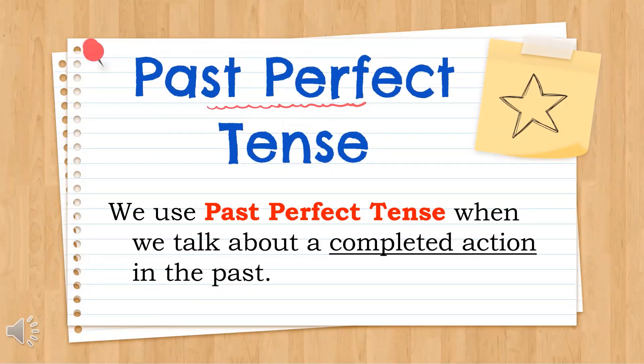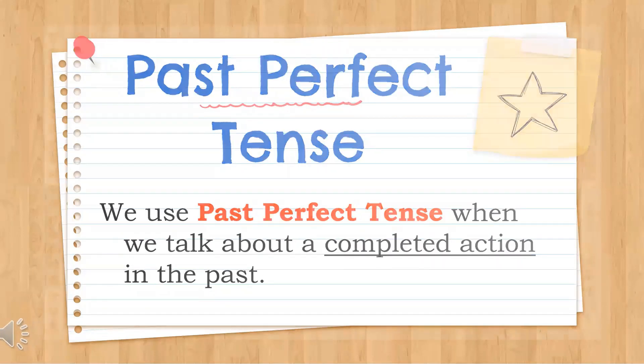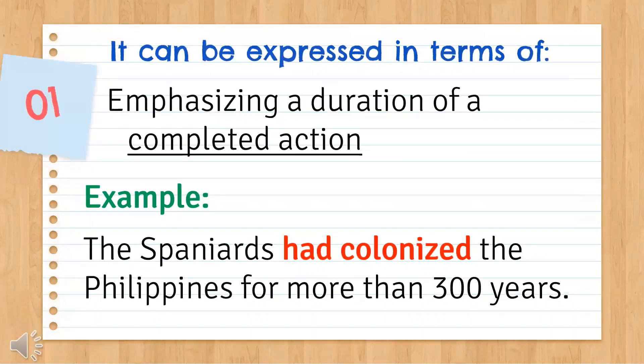We use past perfect tense when we talk about a completed action in the past. It can be expressed in terms of when we emphasize a duration of a completed action. Example: the Spaniards had colonized the Philippines for more than 300 years. 'Had colonized' is the completed action; the duration is 'for more than 300 years.'